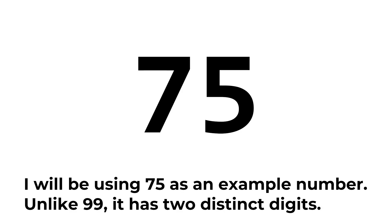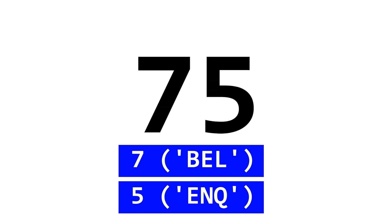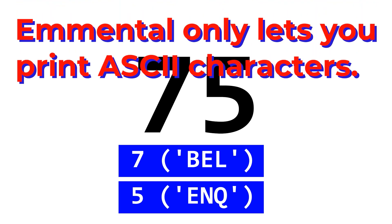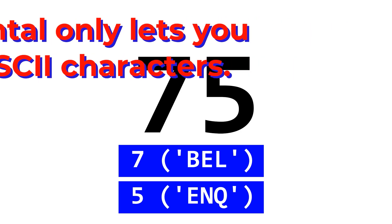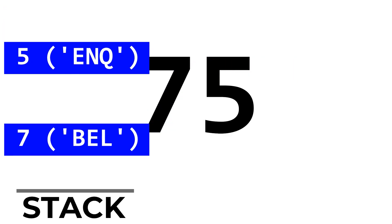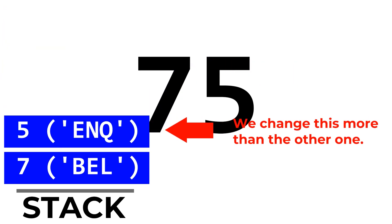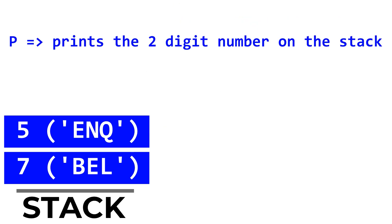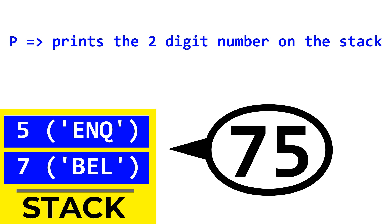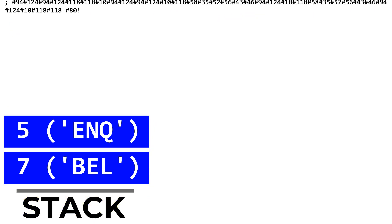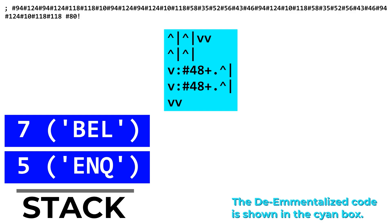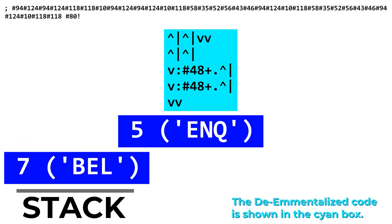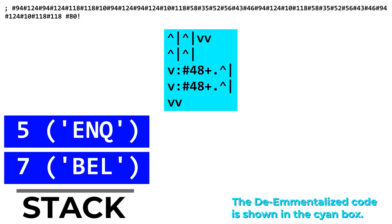The digits of the number of bottles are the only state we need to keep track of in this program, and they are kept as two separate variables, since it's easy to print digits in Emmental but not easy to print whole numbers. The 10's digit is the deeper one in the stack, since it's modified less than the 1's digit. The first thing I did was make an instruction P that, given two digits on the stack, prints them. They're stored in the wrong order for printing, so I used the queue to reverse the digits temporarily, print them, and then reverse them back, leaving the stack the way it was before.